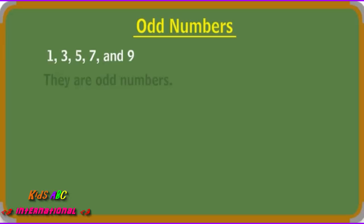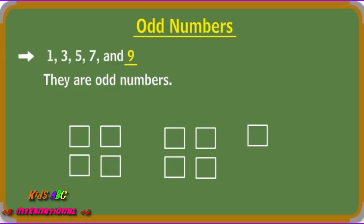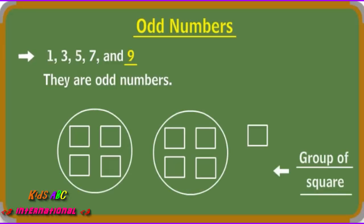They are odd numbers. Let's look at the number 9. This number ends in a 9, which is an odd number. We cannot divide this evenly. In this example, 9 squares cannot be put evenly into 2 groups. We have 2 groups with 4 squares each, and there is another square that is left over.